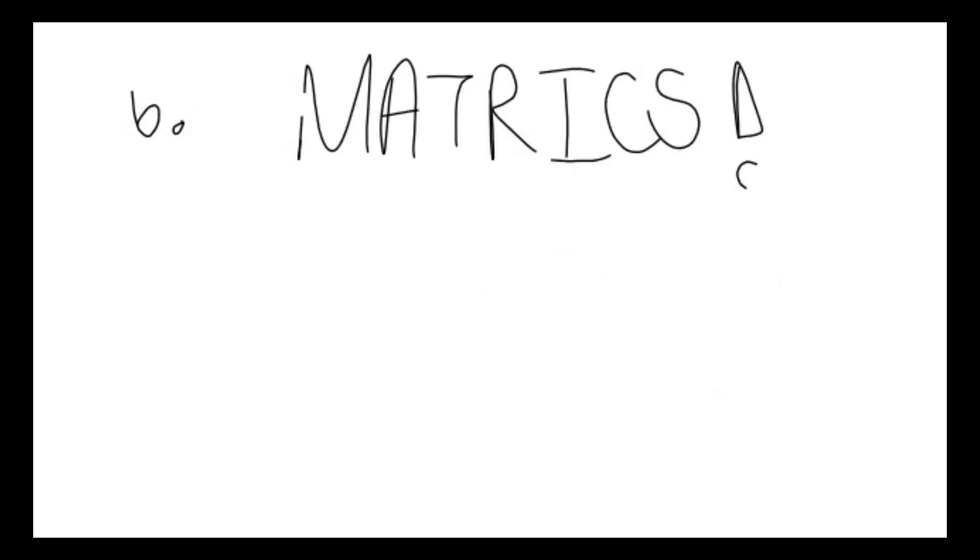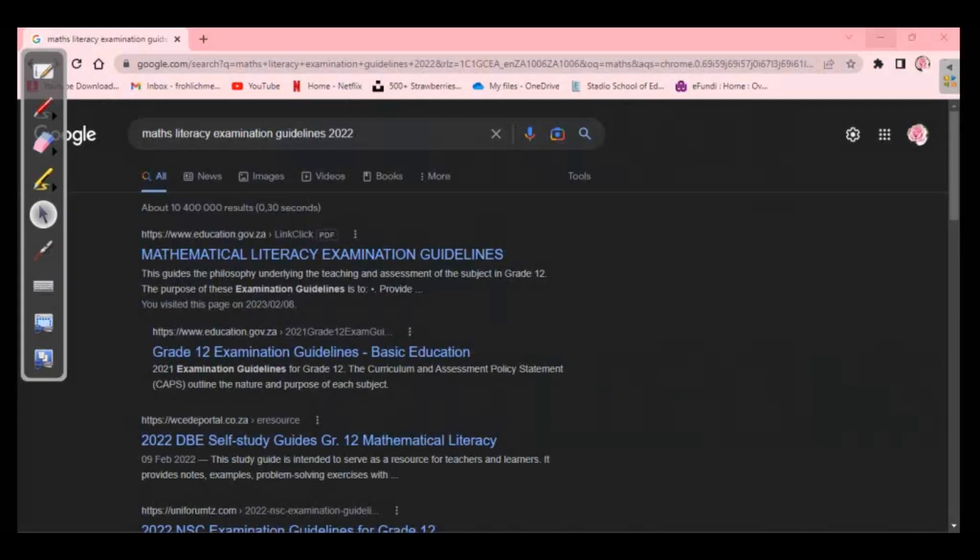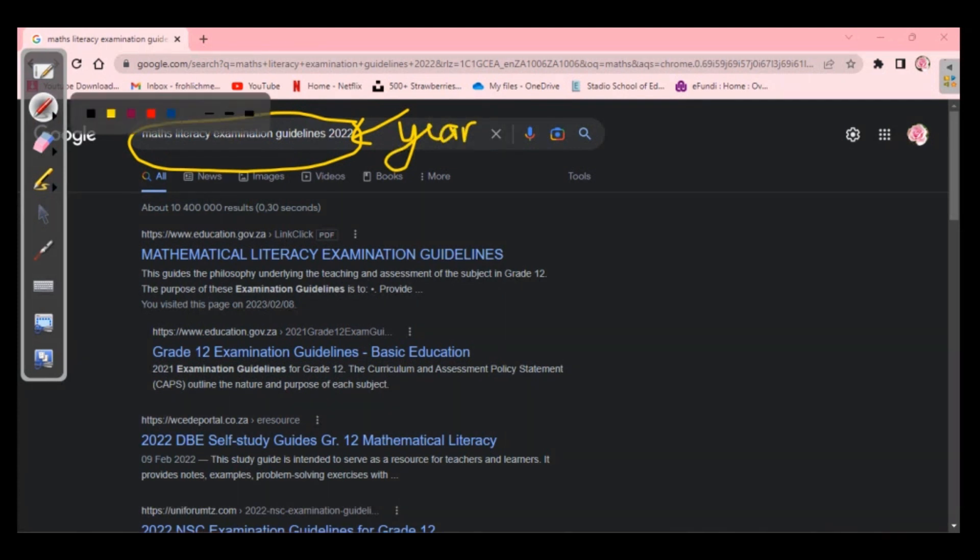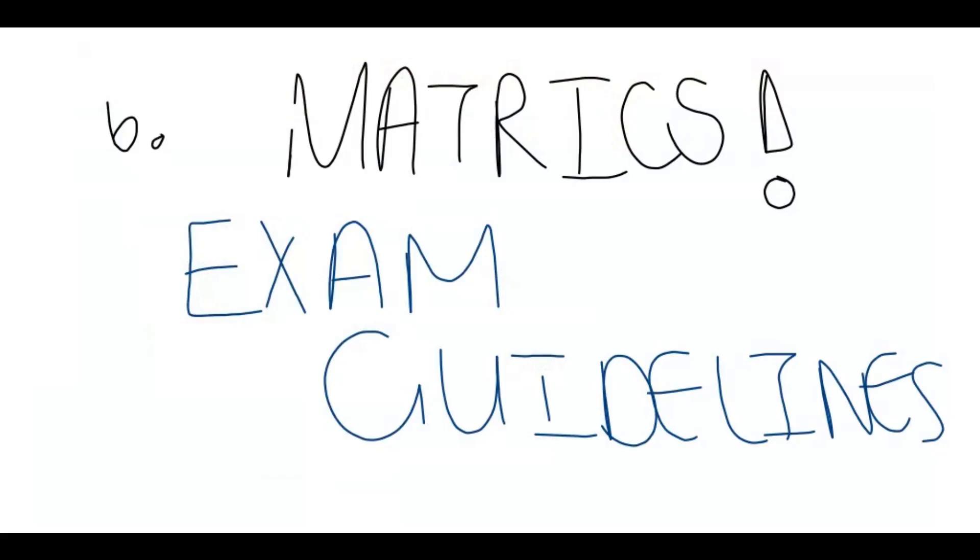Now the sixth thing is, this is especially for matrics, take note. Go and Google your exam guidelines. And I'm going to show you how to do that. You will go on to Google or Yahoo or whatever, go and type in the search bar, Math Literacy Examination Guidelines and the year that you are in. Then you'll see that it should be the first option. It says it's a government website and it's a PDF. So you click on that and just download that.